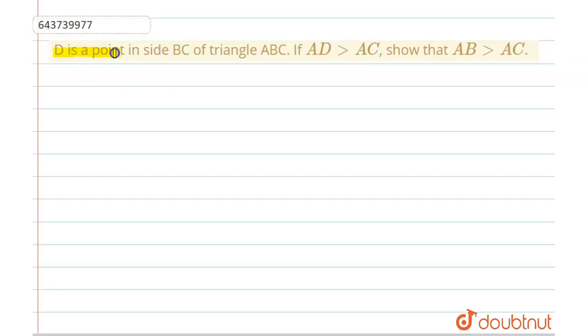is D is a point inside BC of the triangle ABC. If AD is greater than AC, show that AB is greater than AC. So in this question, suppose this is the triangle that we want. This is A,